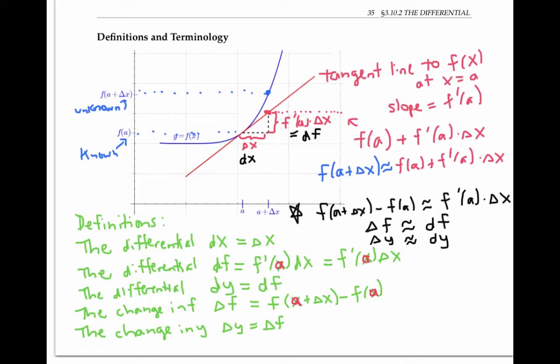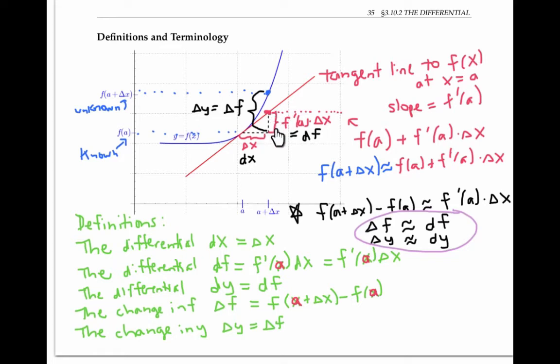Delta f is f of a plus delta x minus f of a — so that's this height here; I'll write that as delta f or delta y. So the approximation principle written in differential notation is just saying that the rise of the function, delta f, is approximated by the rise in the tangent line, df.